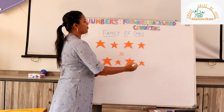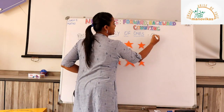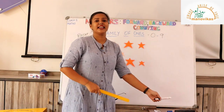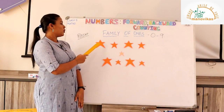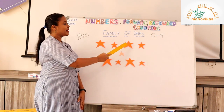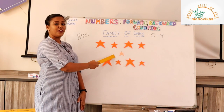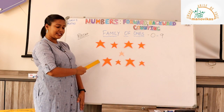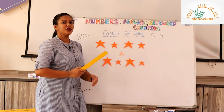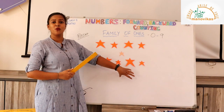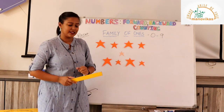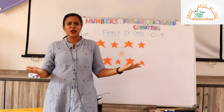In the family of ones, we have numbers from 0 to 9. Let's take a recap — let's count these stars: 0, 1, 2, 3, 4, 5, 6, 7, 8, and 9. We don't add 10 in the family of ones because 10 belongs to the family of tens.